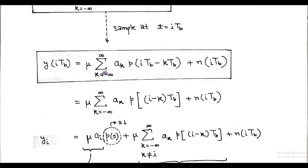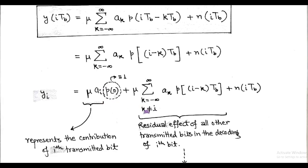From the first term, we separate the summation for k = i and k ≠ i. When k = i, we get μ · a_i · p(0). And when k ≠ i, we get μ · Σ a_k · p((i−k)·T_b). Also, there is a sampled noise term.